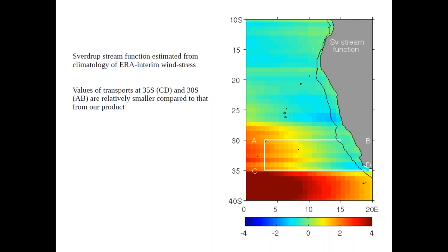Looking at the Sverdrup stream function values: at 30 south the value is around 2 Sverdrup, and at 35 south it is around 2–3 Sverdrup. These are very small compared to the observation-based values from Argo and SSH — about 12 Sverdrup for the A–B section and 19 Sverdrup for the C–D section.